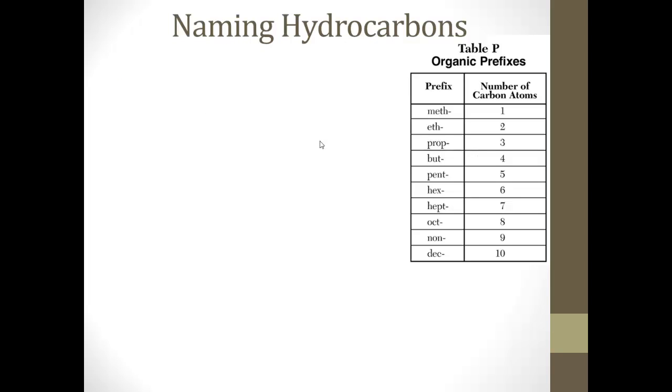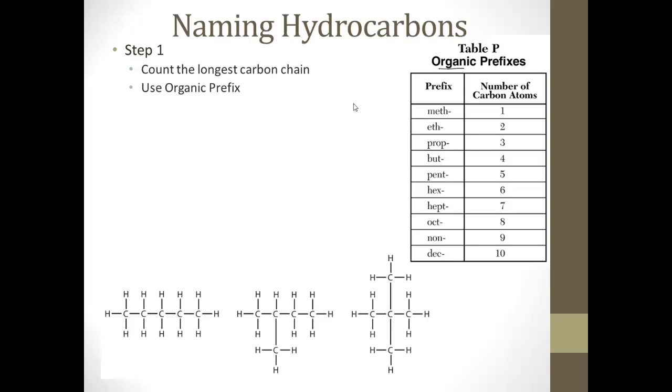Now, one of the more common things you're going to have to be able to do is name hydrocarbons. And the main thing to remember about naming hydrocarbons is the number of carbon atoms in the chain is key. So step one, you're going to count the longest carbon chain and use the organic prefix here from table P. Alright, so if we look at some of these, we count the carbon chain, one, two, three, four, five. So we look down to five, and pent.